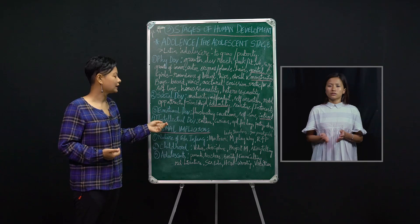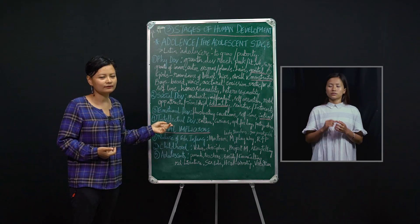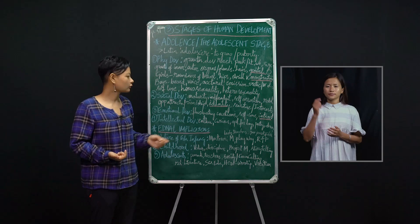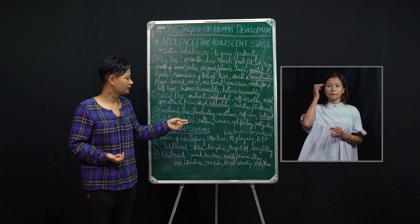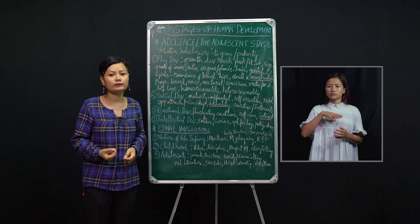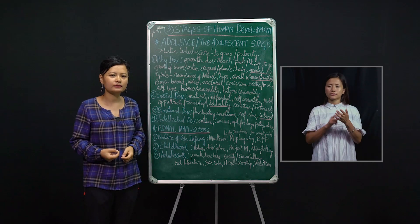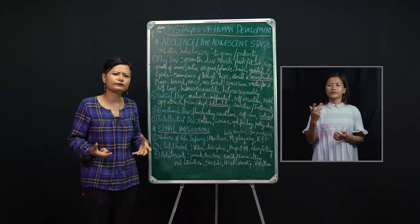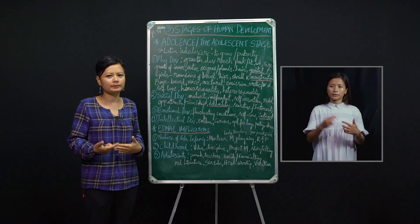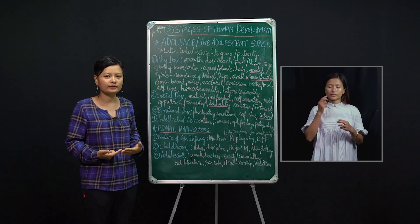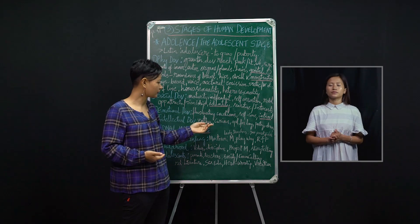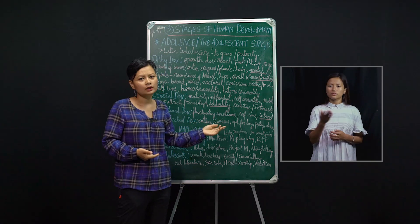Now let us come to the intellectual development — intellect is to do with the mind. Under intellectual development, adolescents become very enthusiastic. Whatever they do, they give their full heart and mind to it. They become very expressive and good at doing their job. They also become enthusiastic and very curious — the adolescent is trying to grow into a mature individual, so he is curious about a lot of things.